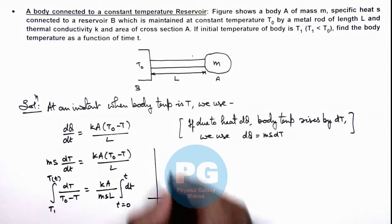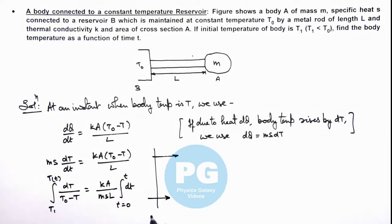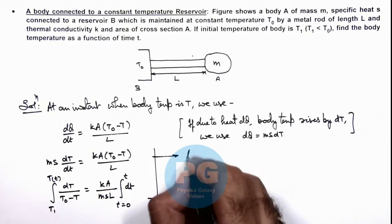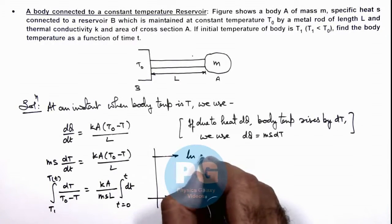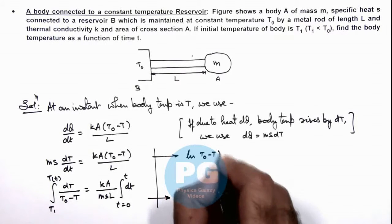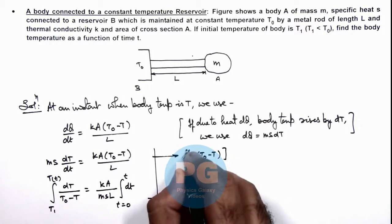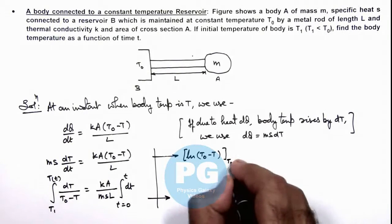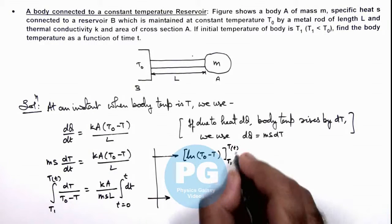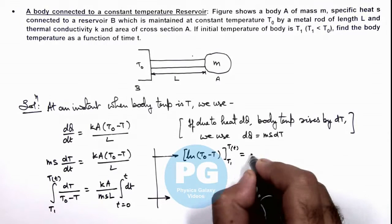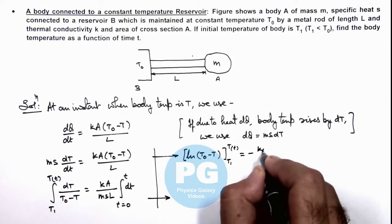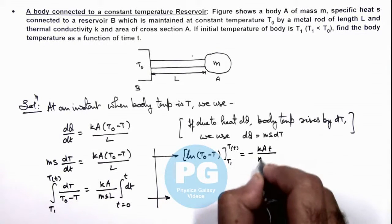On integrating these terms, this gives us ln of (T₀ - T), where we substitute the limits from T₁ to T as a function of time, and a negative sign can be taken on the other side: minus kAt/(msL).